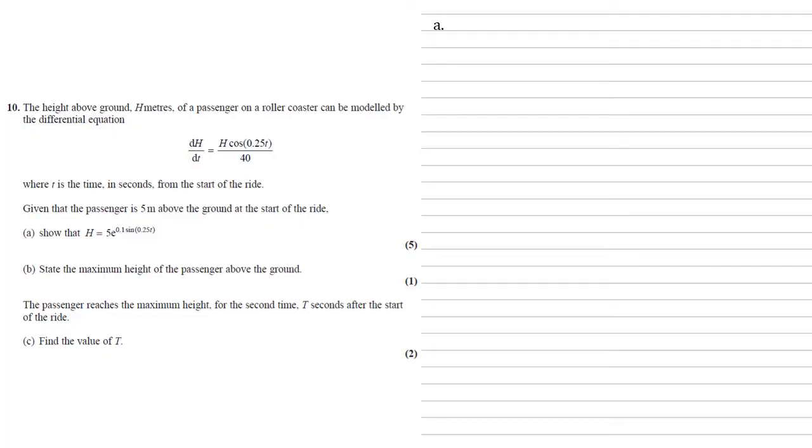The height above ground, h meters, of a passenger on a roller coaster can be modeled by the differential equation dh by dt equals h cos 0.25t all over 40, where t is the time in seconds from the start of the ride. Given that the passenger is 5 meters above the ground at the start of the ride, show that h equals 5e to the 0.1 sin 0.25t.